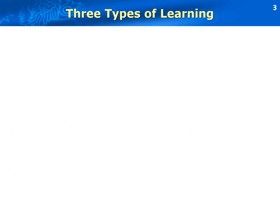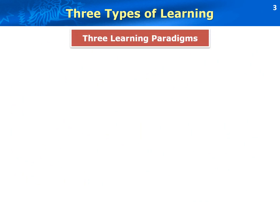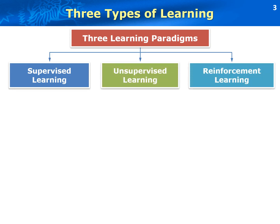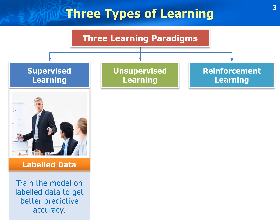First, let's look at three learning paradigms that are commonly used in neural computing and machine learning. They are supervised learning, unsupervised learning, and reinforcement learning. In supervised learning, the data is labeled. We train the neural network model on labeled data to get better accuracy. The goal of supervised learning is to learn the mapping function from input to output such that when we have new input data, we can use this mapping function to predict the output.